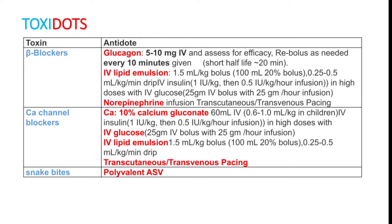Next toxin is snake bite toxin. In India we have polyvalent anti-snake venom. Most bites may require 5 to 10 vials of ASV, which should be diluted — every vial diluted in 10 ml of saline and given over 10 minutes. A normal bite may require 5 to 10 vials, and the maximum vials that can be given is 25 to 30.